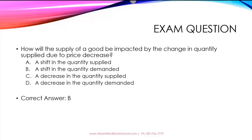In this case, the correct answer is B. If the supply of a good is impacted due to price decrease, it will actually result in a shift in the entire demand curve. So that's why the correct answer is B, a shift in the quantity demanded.